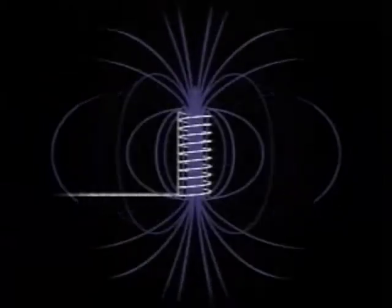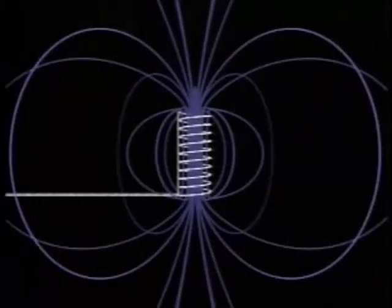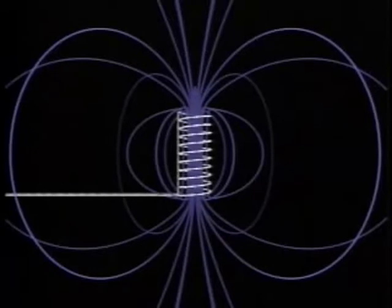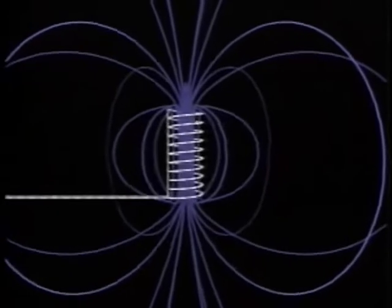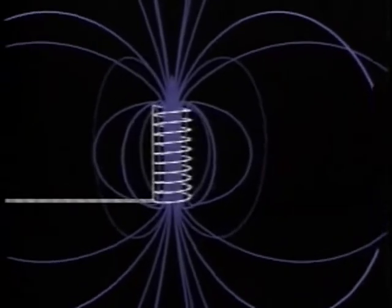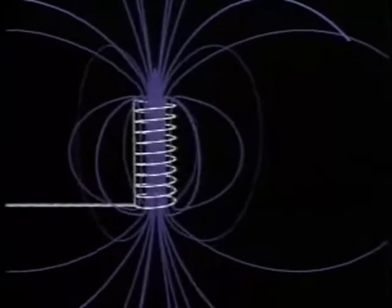A helical winding, or solenoid, is like a stack of current loops. It creates a field much like that of a bar magnet.